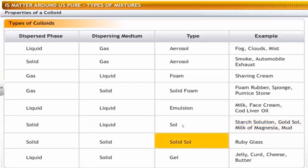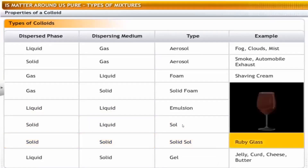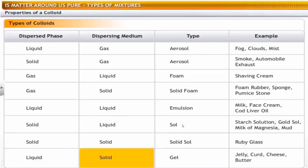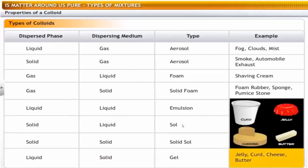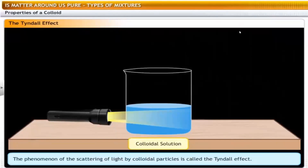A solid sol is a colloid in which both the dispersed phase and the dispersing medium are solids — for example, ruby glass in which gold is dispersed in glass. A gel is a colloidal system that contains a liquid as the dispersed phase and a solid as the dispersing medium — for example, jelly is a colloid of water dispersed in gelatin. Curd, cheese and butter are all gels. When a fine beam of light passes through a colloidal solution placed in a dark place, the path of the light becomes visible.